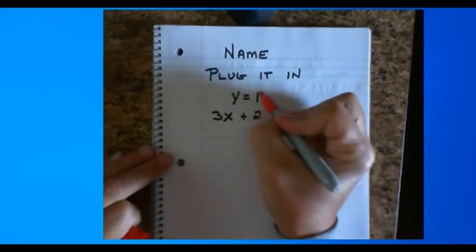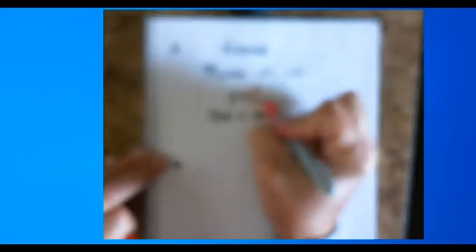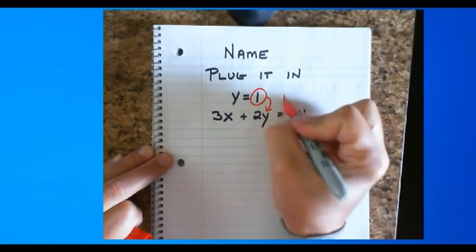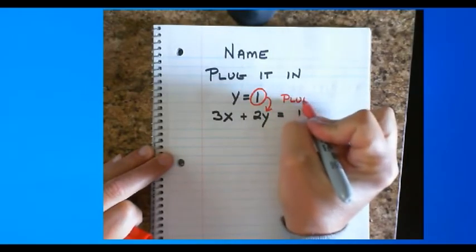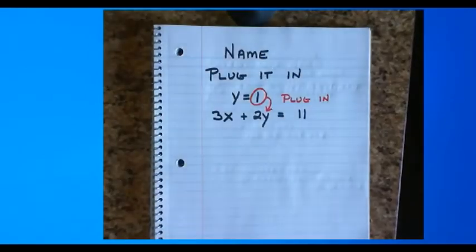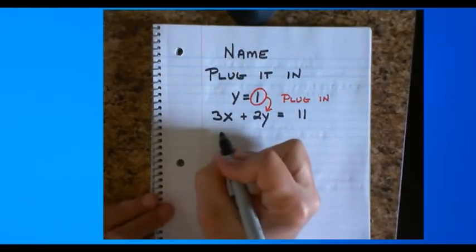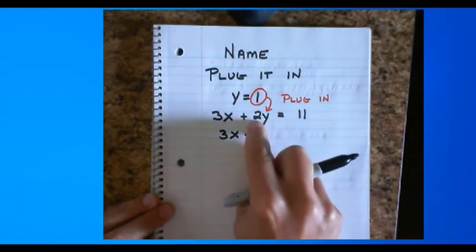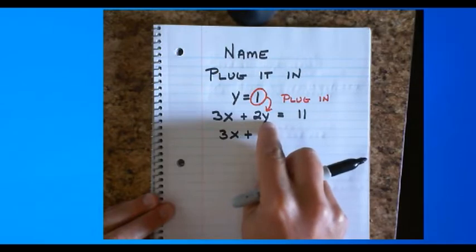So, I'm gonna take this guy right here. And I'm gonna plug it in right there. And when I plug that in, I will have 3x plus, well, what's 2 times 1? 2 times 1 is 2.